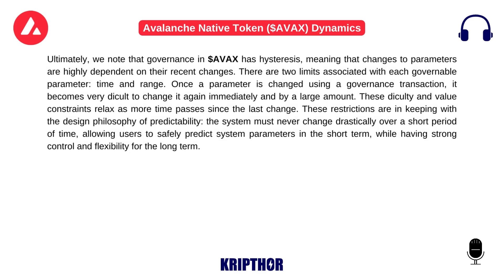Ultimately, governance in AVAX has hysteresis, meaning that changes to parameters are highly dependent on their recent changes. There are two limits associated with each governable parameter: time and range. Once a parameter is changed using a governance transaction, it becomes very difficult to change it again immediately and by a large amount. These difficulty and value constraints relax as more time passes since the last change. These restrictions are in keeping with the design philosophy of predictability — the system must never change drastically over a short period of time, allowing users to safely predict system parameters in the short term while having strong control and flexibility for the long term.